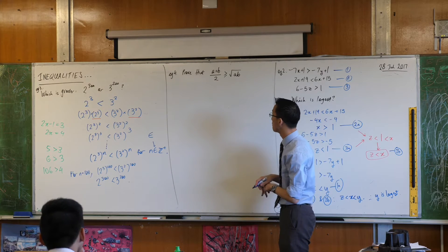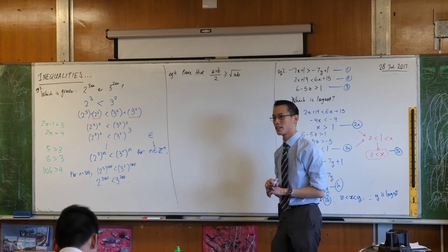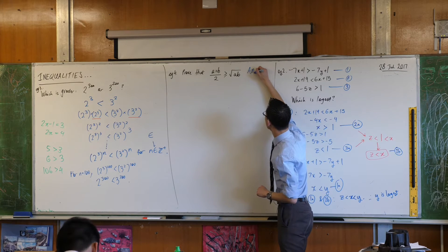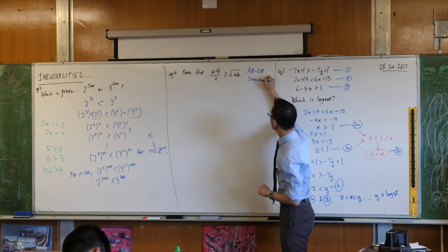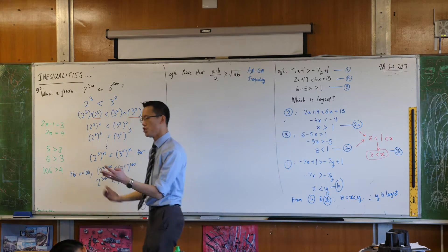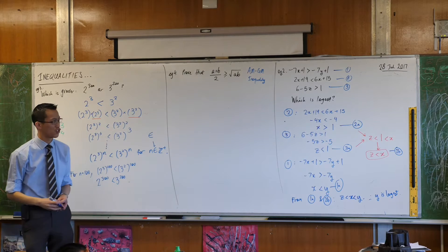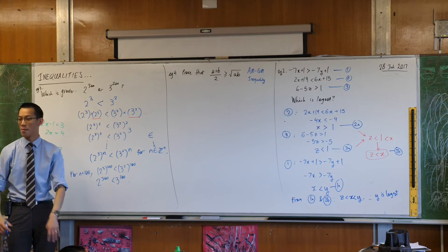This is actually a really special result which you may or may not encounter in year 12, but because it's a special result it has a name, it's called the AM-GM inequality. If you're curious about what that means you can ask me at the end, but knowing what that means doesn't help you solve the question that much, so I'm not going to worry about the meaning for now.